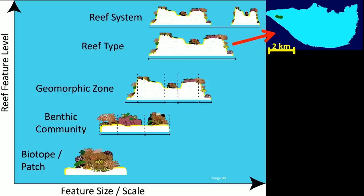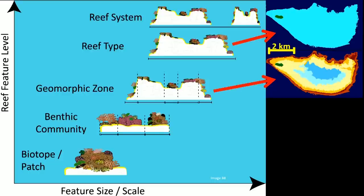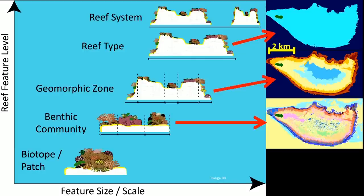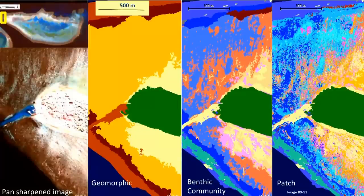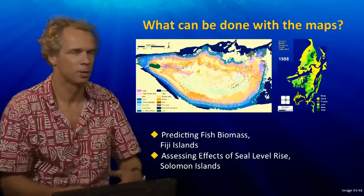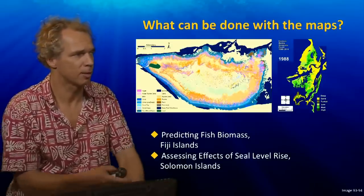All these levels of detail can be mapped to a certain extent. Here you see the geomorphic map, the reef type map, the benthic community map, and the biotope map. The zoomed-in examples show, on the left, the satellite image — a band-sharpened image with the deep blue channel, boats in the middle, and Heron Island. Next is the geomorphic map, followed by the benthic map, and on the right the patch-scale map. Each of these maps provides valuable information at different spatial scales and detail, useful for management and researchers.